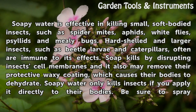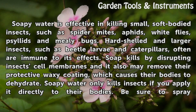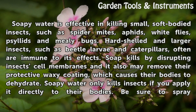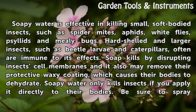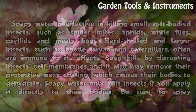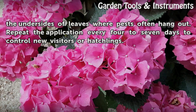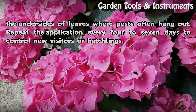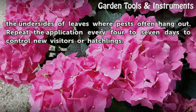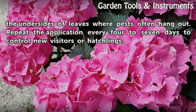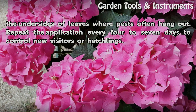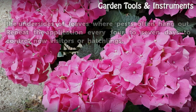Soap kills by disrupting insect cell membranes and it also may remove their protective waxy coating, which causes their bodies to dehydrate. Soapy water only kills insects if you apply it directly to their bodies. Be sure to spray the undersides of leaves where pests often hang out. Repeat the application every four to seven days to control new visitors or hatchlings.